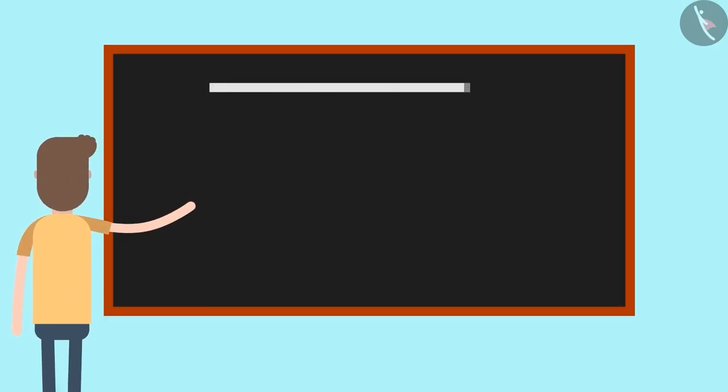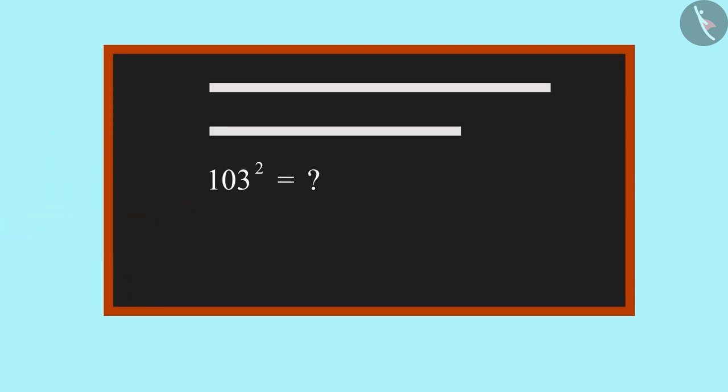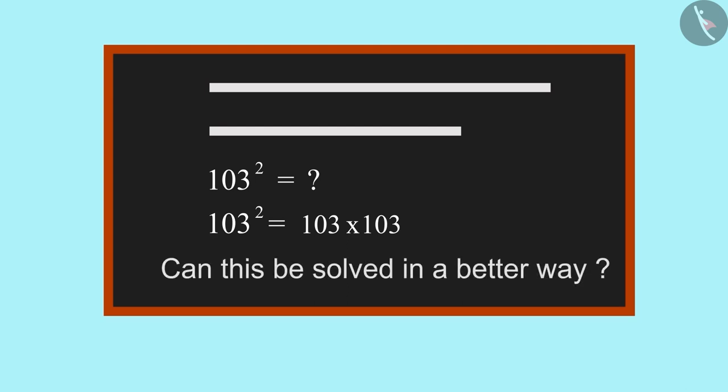Raj is working on a problem that involves solving large numbers. He reaches a point where he needs to find the square of 103. But he realizes that multiplying 103 by 103 will take a lot of time. Can you help him solve this problem in a better way?